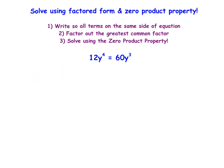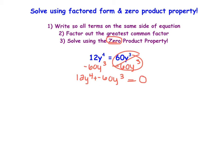The next thing to address is what happens when we don't have a 0 as part of our problem. To utilize the zero product property, we need something that equals 0. If we have items on both sides of the equation, we use our knowledge of equations to rewrite it — subtracting 60y³ from each side so that all terms are on the same side and the equation equals 0.